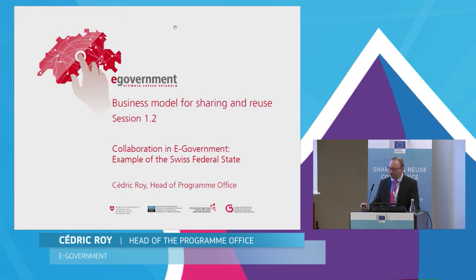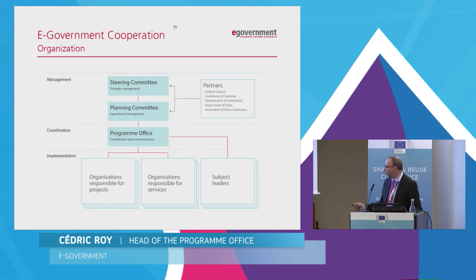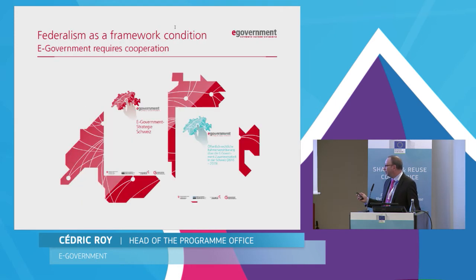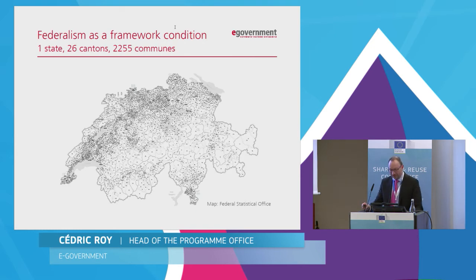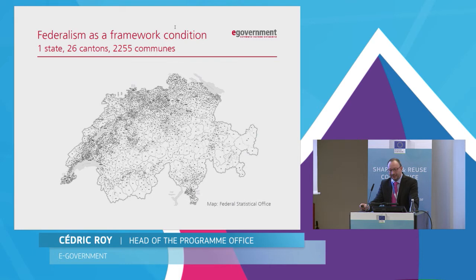Before I come to the main theme, I have to explain something about the Swiss Federal State and how it is organized. Switzerland is divided into 26 regions that we call cantons. All these cantons are divided into municipalities that we call communes. There are more than 2,000 communes in Switzerland. Although there is a federal government with federal institutions, each canton and each commune has its own government and administration.